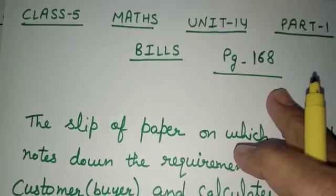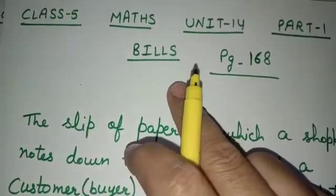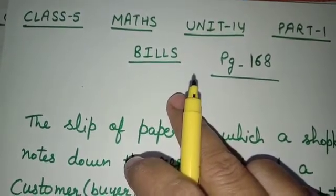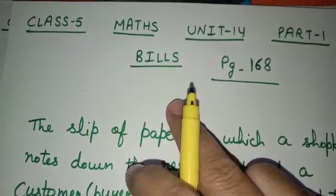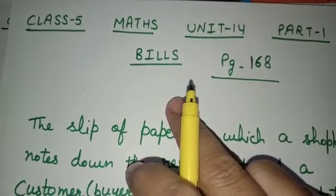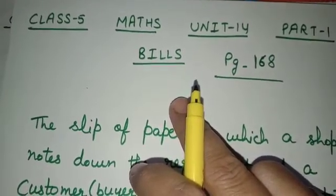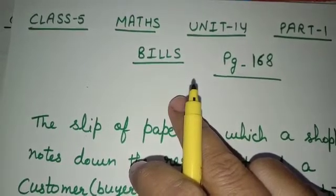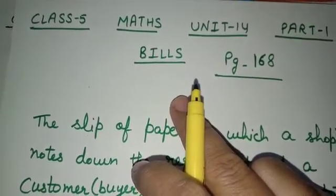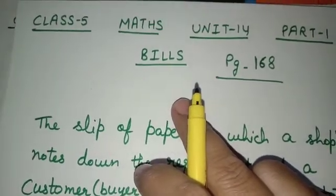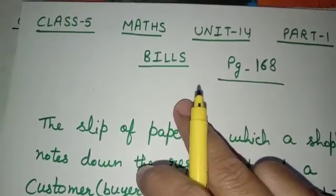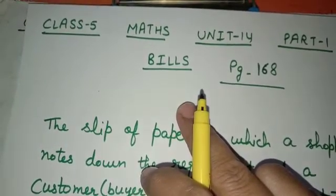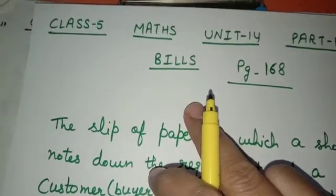The very first question in the chapter is: what is a bill? Everyone must have heard about the word bill. When we visit the market to purchase something, the shopkeeper gives us a slip of paper on which he notes down our requirements and also writes the total cost of the items. That is called a bill.